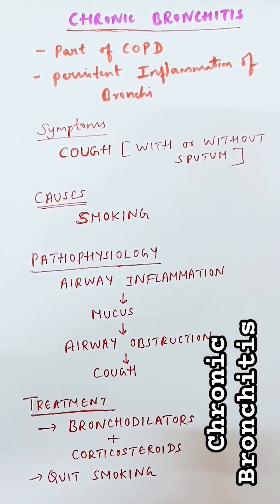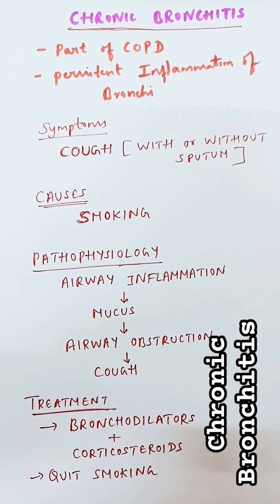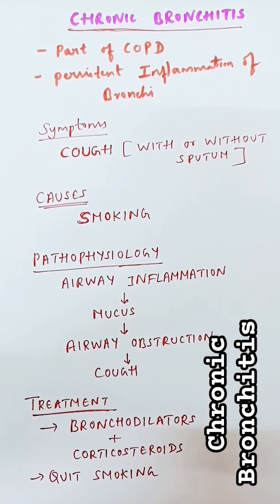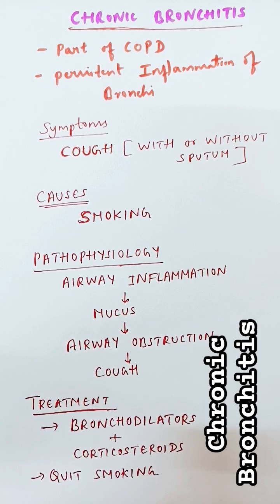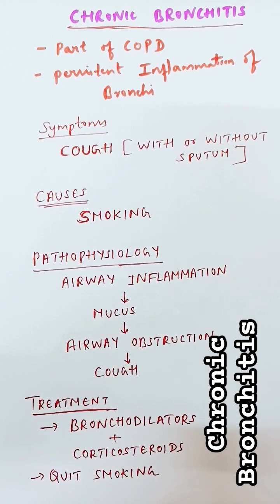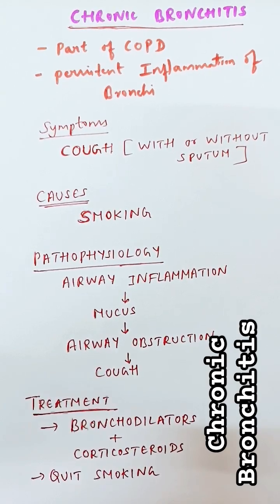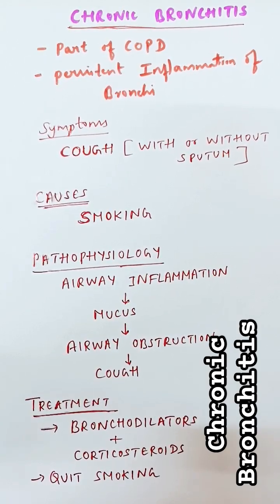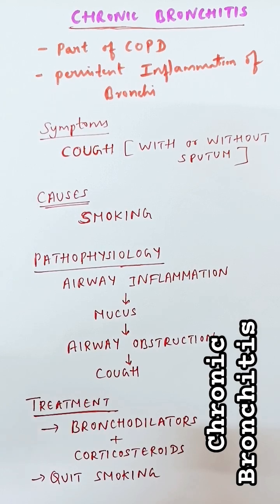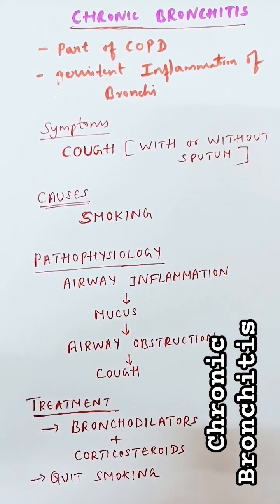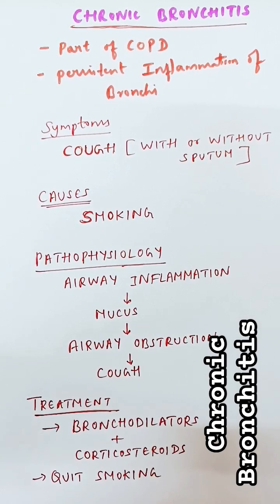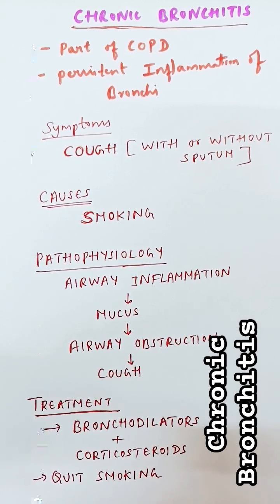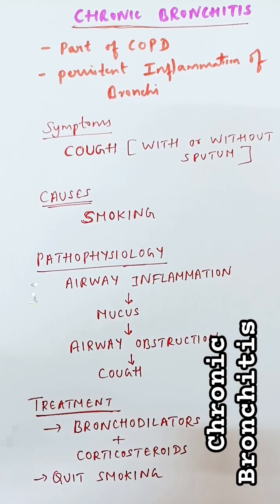The main pathophysiology is that in chronic bronchitis, since the airway is inflamed, that itself will produce cough, or sometimes the production of mucus leads to airway obstruction, which can lead to chronic cough as the airway tries to clear the mucus.